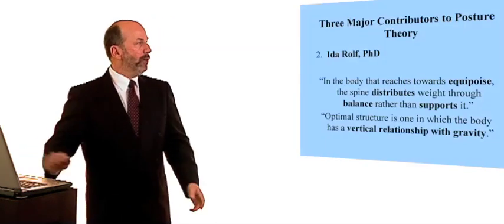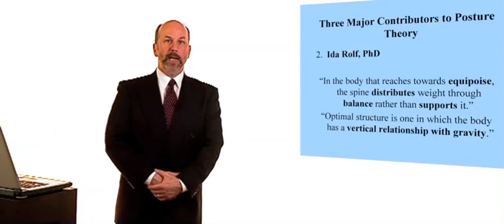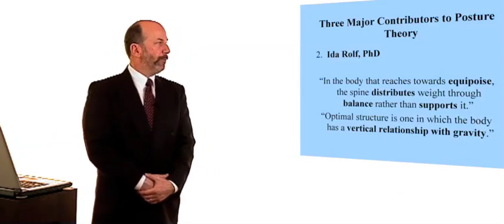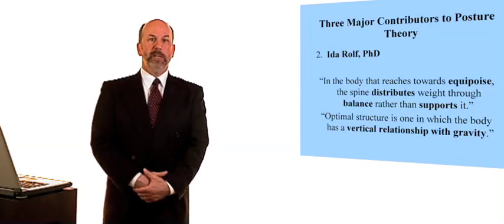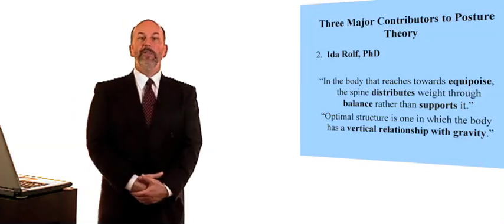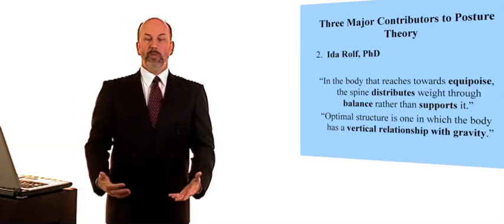The second contributor to our understanding of ideal human alignment is Ida Ralf. Ida Ralf talked about the balanced body as being one in which we had equipoise, in which there was a vertical relationship with gravity.